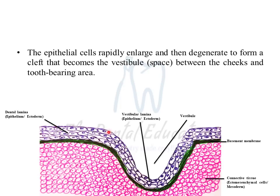The cells which rapidly enlarge then degenerate, leaving a space between the tooth-bearing area and the cheek area. This hollow space is basically referred to as the vestibule. The vestibule is lined by the vestibular lamina, which is epithelial in origin.